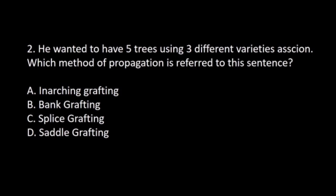Number 2. He wanted to have 5 trees using 3 different varieties as scion. Which method of propagation is referred to in this sentence? A. Inarching grafting. B. Bank grafting. C. Splice grafting. D. Saddle grafting. The answer is B. Bank grafting.